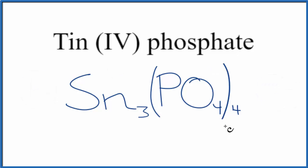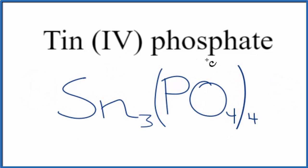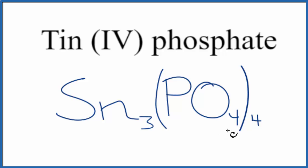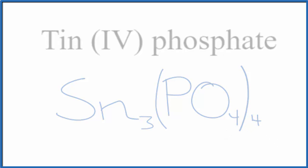So this is the correct formula for tin (IV) phosphate: Sn3(PO4)4. This is Dr. B. Thanks for watching.